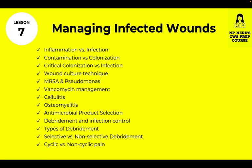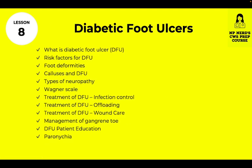Lesson 7 covers managing infected wounds — the difference between critical colonization and infection, MRSA and Pseudomonas, debridement, types of debridement, and selective versus non-selective debridement. Lesson 8 covers diabetic foot ulcers, including risk factors, how to offload foot ulcers, the Wagner scale, and types of neuropathy.